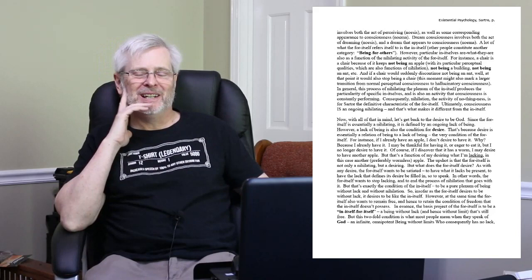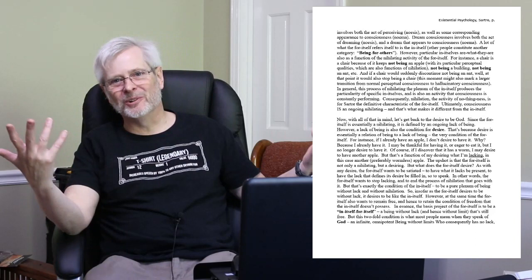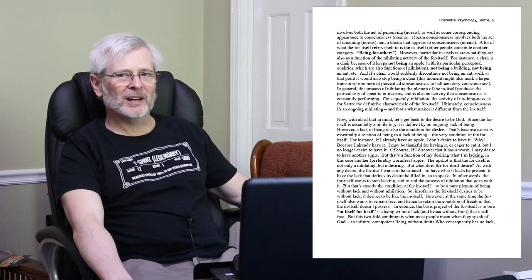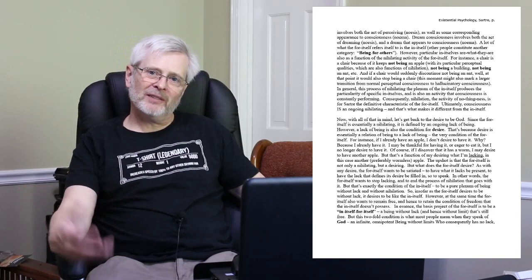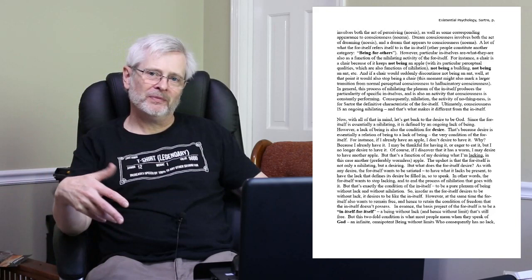We're back after a little snafu — the microphone fell on the floor and I delivered the rest of the lecture with lousy sound, so let's redo that part. We ended with the question: what is it at the ontological level that we really desire? Basically, at the most basic levels of our being, what we want is to have what we lack be present — to have the lack that defines our desire be filled in.